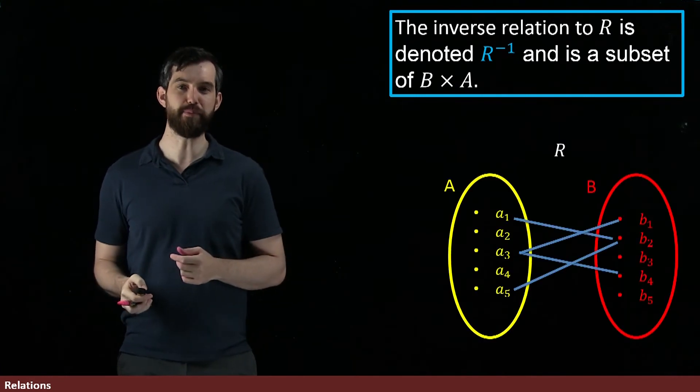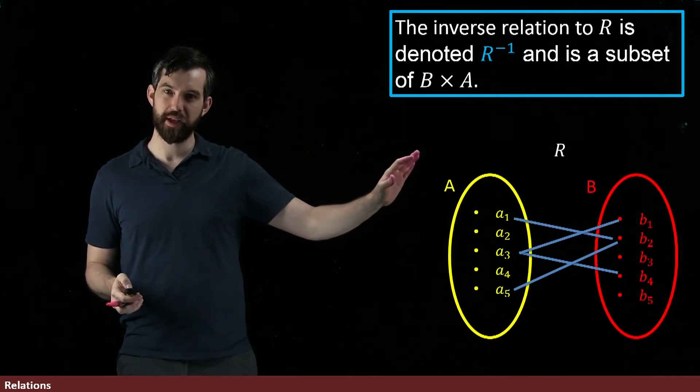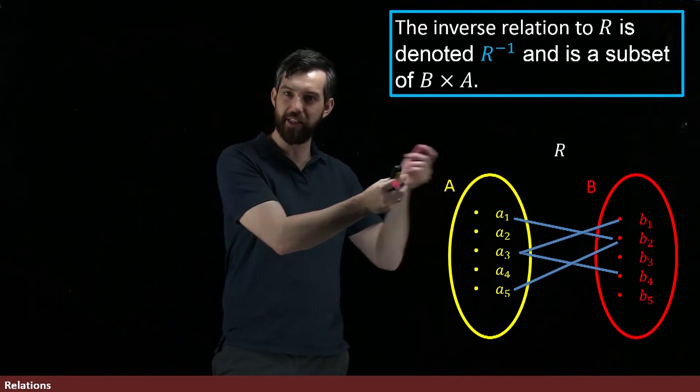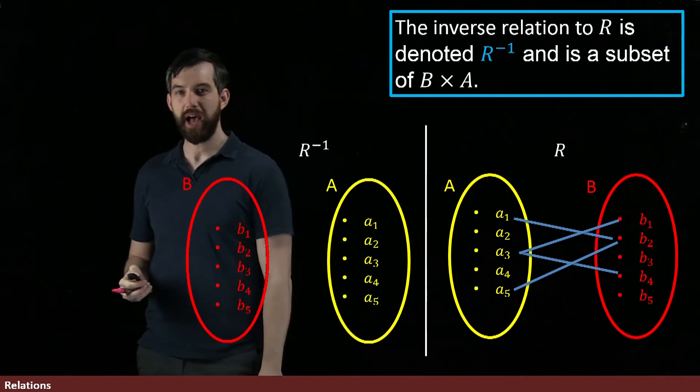So, for example, let me put up my relation R that I saw before. For the inverse relation, we're going to try to take the A and the B and we're going to try to swap them. So, I'm going to put them up, I'm not going to fill in the arrow just for the moment...